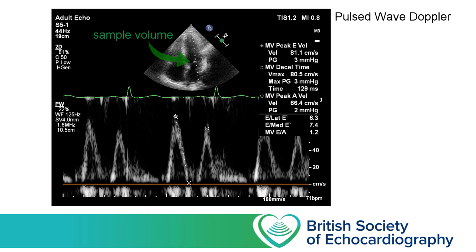Now we won't be using spectral Doppler as part of our Level 1 scans. However, the technique of sending out a pulse of ultrasound and then gating the response to a specific region of interest is exactly the technique that the ultrasound software will use to generate colour maps for us. So there's some merit in understanding how this is done, as it will allow us to go on and discuss some of the strengths and limitations of this technique.